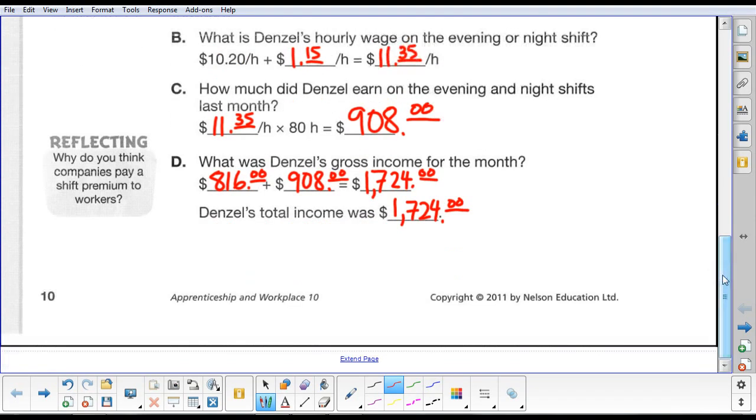Okay, and that's all there is. So, reflective. Why do you think companies pay a shift premium to workers? Well, very simple. Everybody, in an ideal situation, wants to work day shift. But we know that stores are open late hours and early hours. So to entice workers to work outside of the regular day shift hours, they need to maybe give them a little incentive.